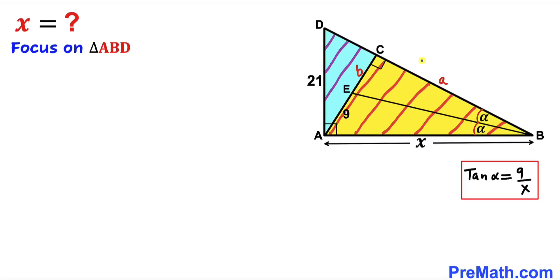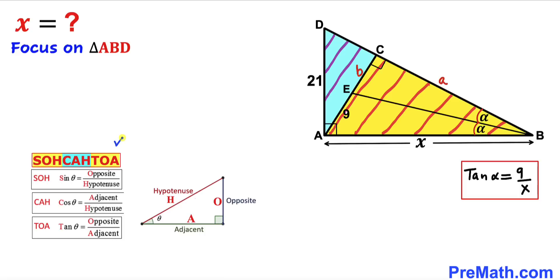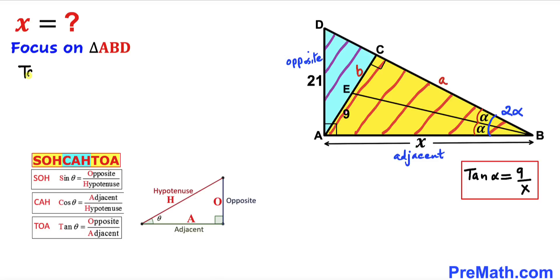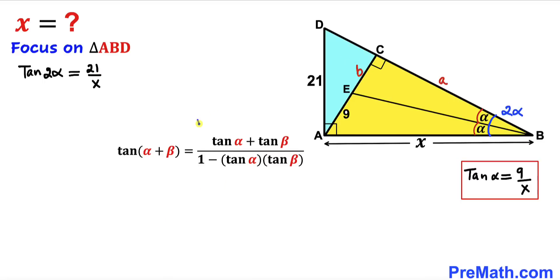Now let's focus on the big right triangle ABD and apply SOH-CAH-TOA again. The full angle at A is alpha plus alpha, making 2 alpha. The opposite side is 21 and adjacent is x, so tangent of 2 alpha equals 21 divided by x. Let's recall the identity: tangent of (alpha plus beta) equals tangent alpha plus tangent beta, all over 1 minus tangent alpha times tangent beta.